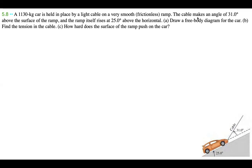We already have a diagram provided — it's a bit grainy from the older edition, but it does the job. We can see the car on the ramp, which rises at 25.0 degrees above the horizontal, and the cable making an angle of 31.0 degrees above the surface of the ramp.